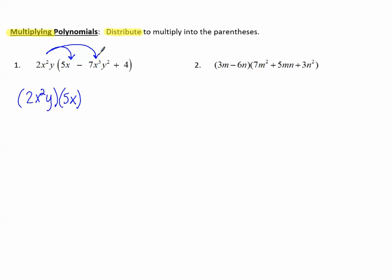Then, to the next monomial, minus 2x²y times 7x³y². And finally, plus 2x²y times 4.